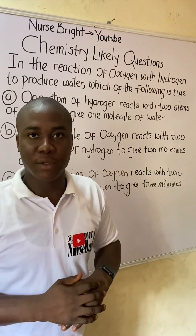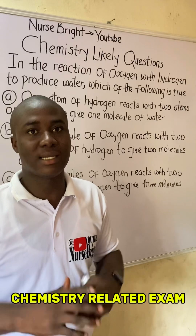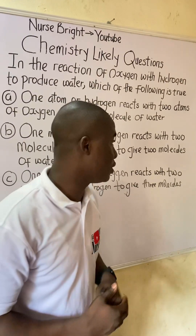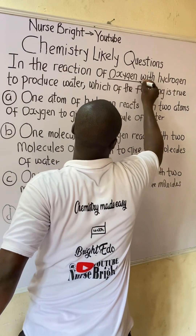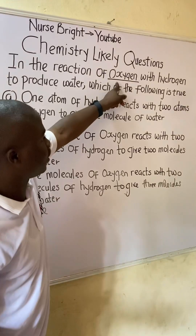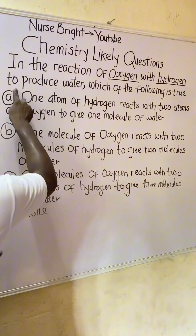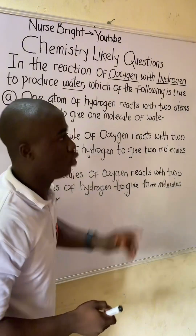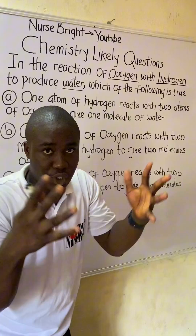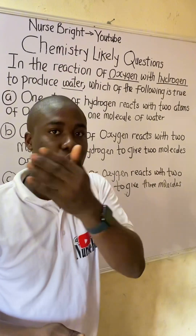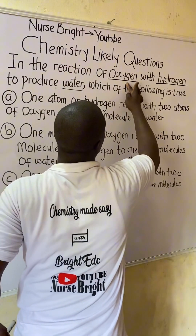If you came across this question in your chemistry exam — whether you are preparing to write the JAMB exam, post-UTME exam, or any other chemistry-related exam — how will you solve it? It is extremely easy. The question says: in the reaction of oxygen with hydrogen to produce water, which of the following is true?